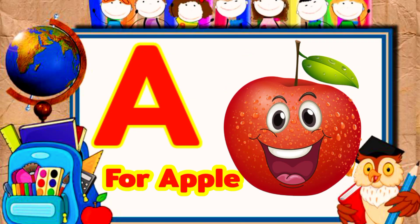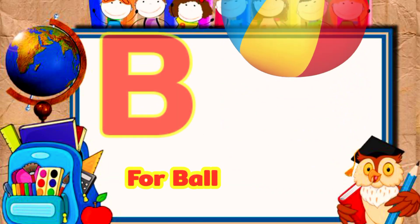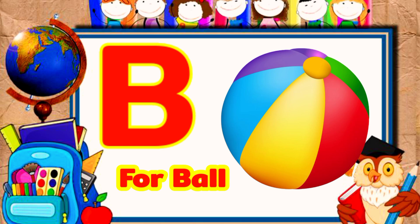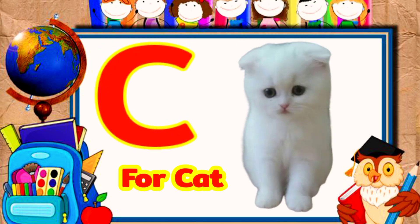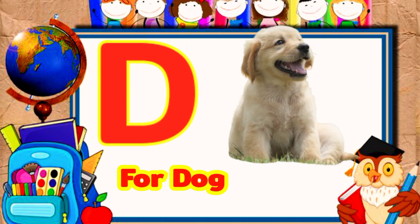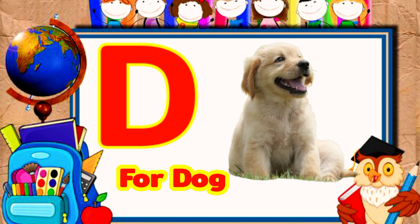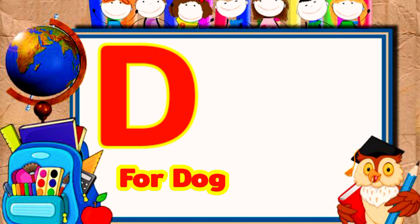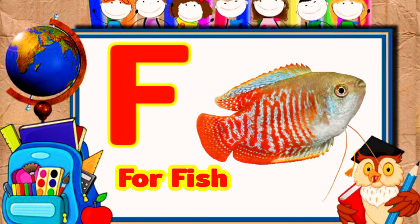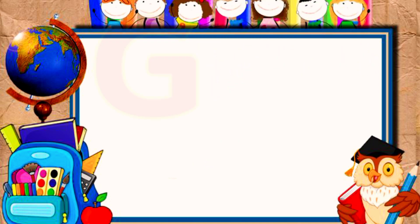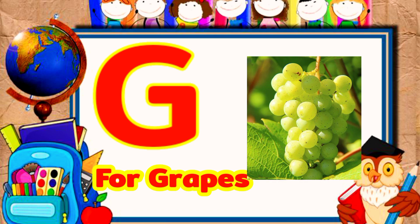A for apple, B for ball, C for cat, D for dog, E for elephant, F for fish, G for grass.